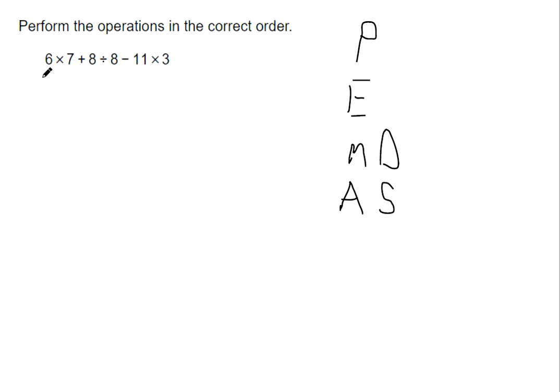Look for parentheses first. No parentheses. Okay, we're done with that. Read the problem left to right. Look for exponents. That would be something like this, with like a 2 or a 4 in the exponent position. No exponents. So we're done with that.